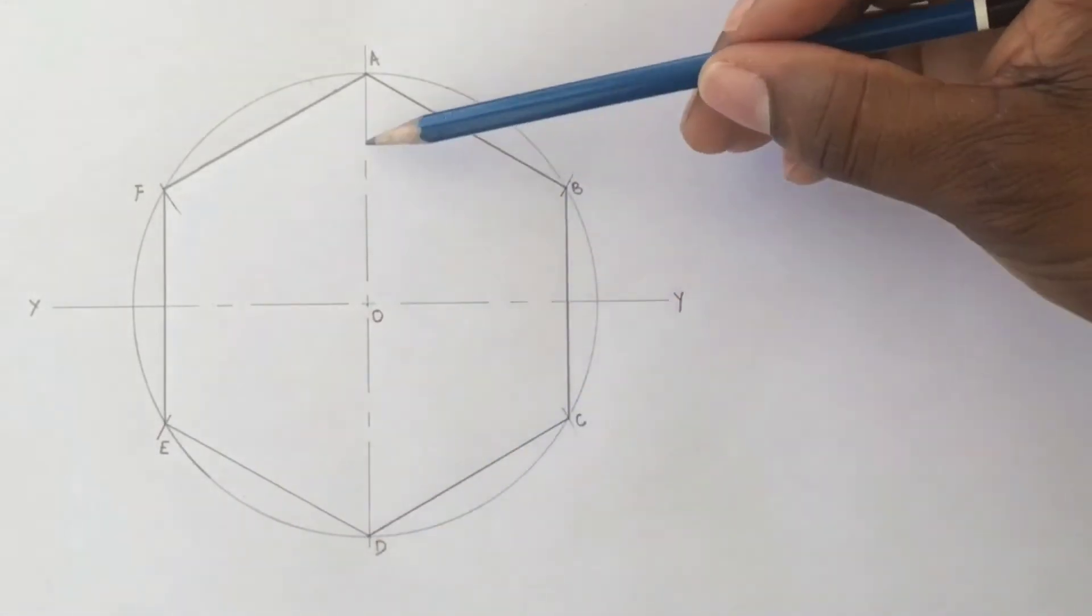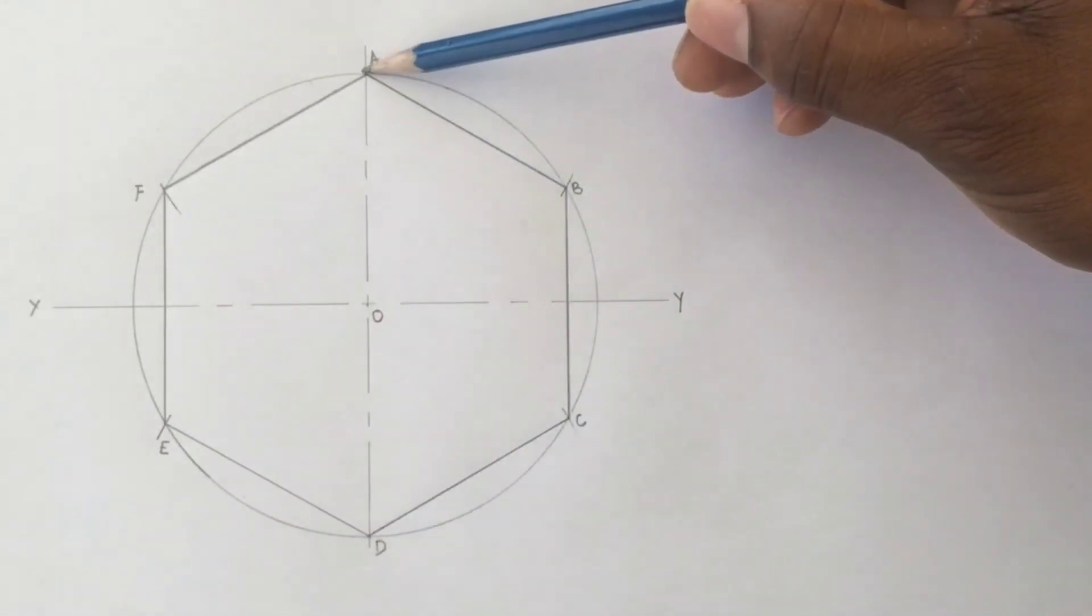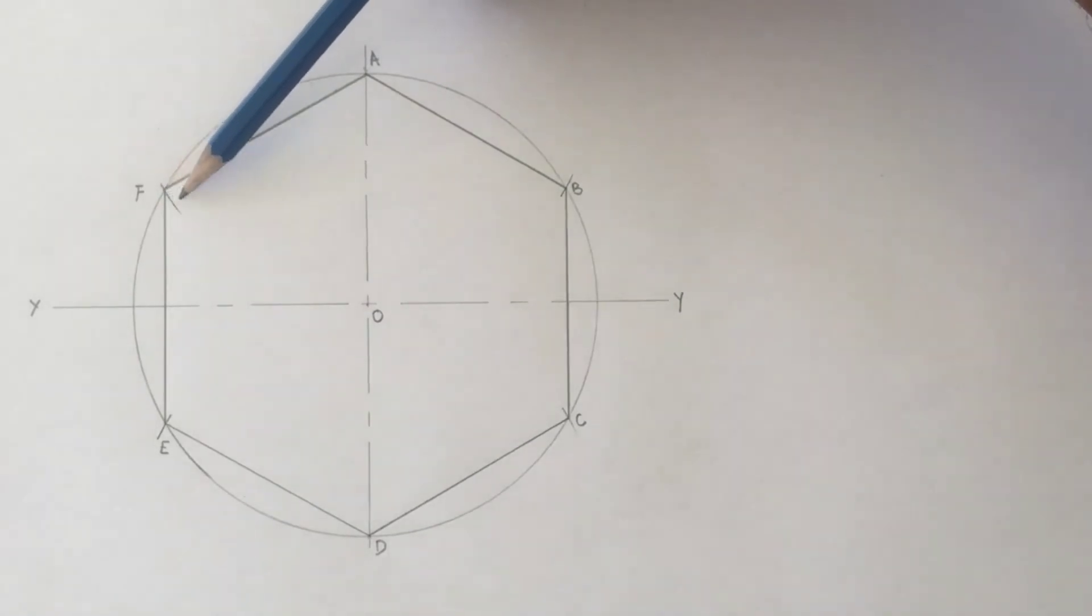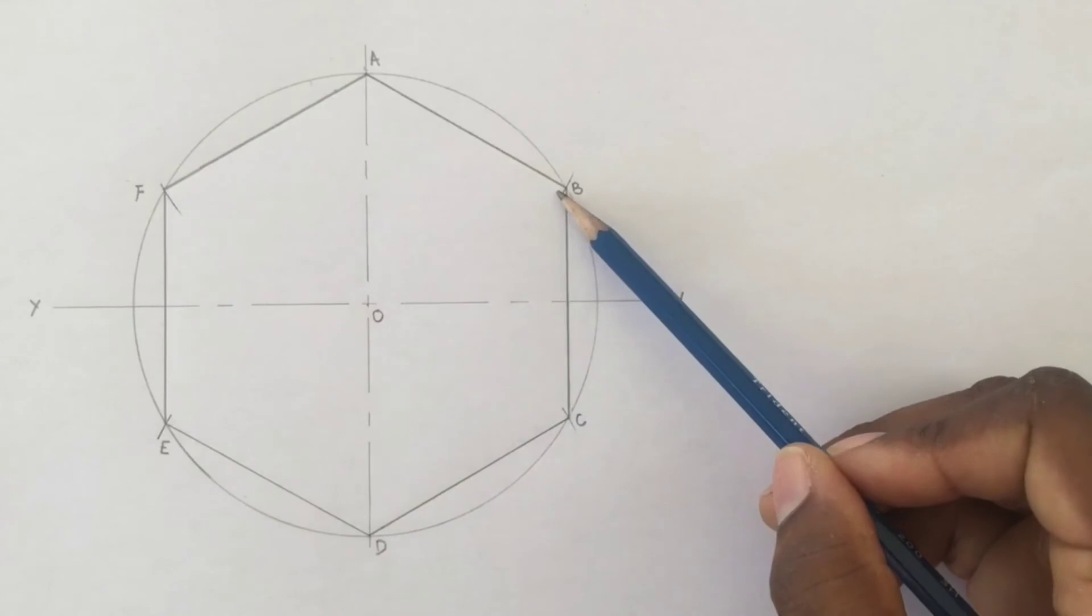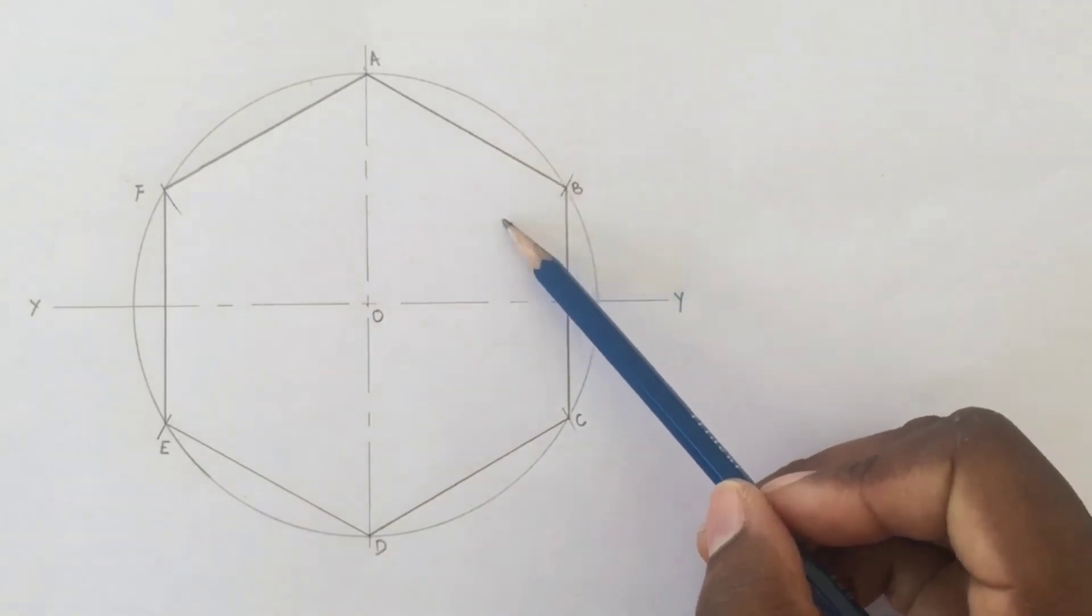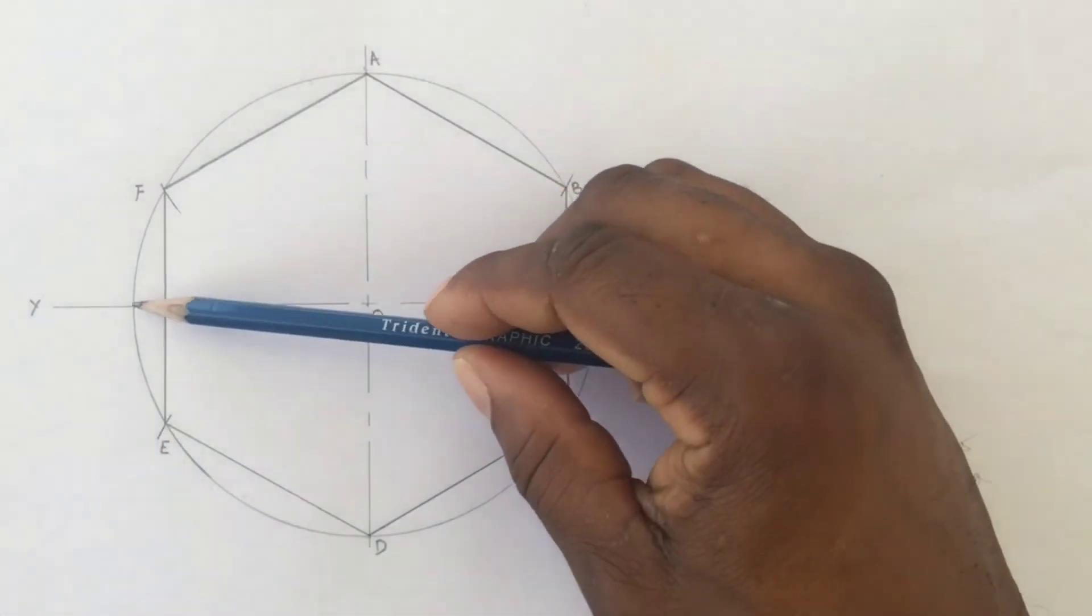The distance between opposite corners is the same as our diameter. From F to C and our diameter is the same. From E to B and our diameter is the same, 120 millimeters.